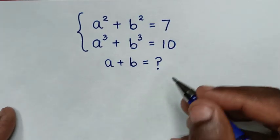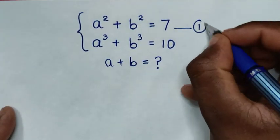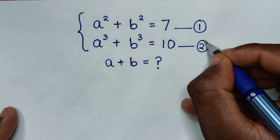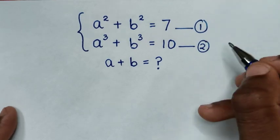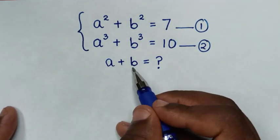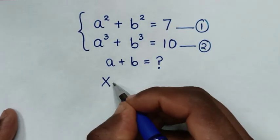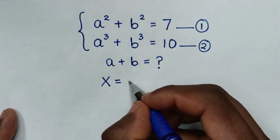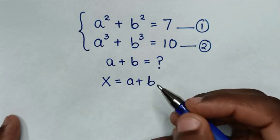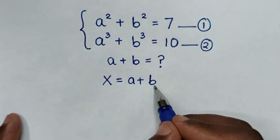Now in the first step, we start by letting this as equation 1 and this as equation 2. Then, because we are finding a plus b, to make it in simple form, we will let x be equal to a plus b. So we will be finding the value of x, which is a plus b.